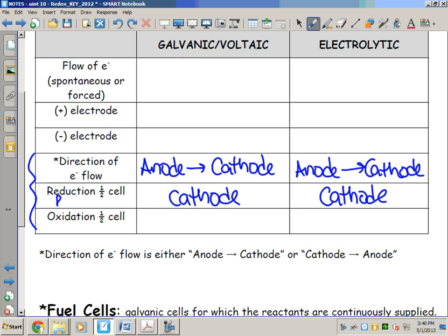Remember we said before red cat has no exceptions. We also said if red cat has no exceptions and ox, that the anode is the site where oxidation occurs, or the half cell where oxidation occurs. That always has to be the case.